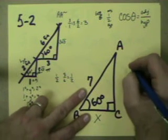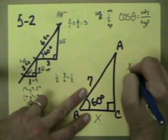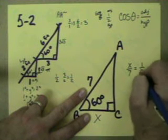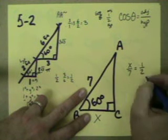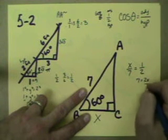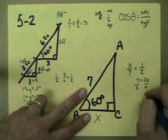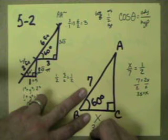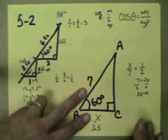Anyway, in this one, we know that x over 7 has to equal 1 over 2. Let's just cross multiply, and that'll give us 7 has to equal 2x, which means x has to equal 3.5. So I know that this side right here is 3.5.